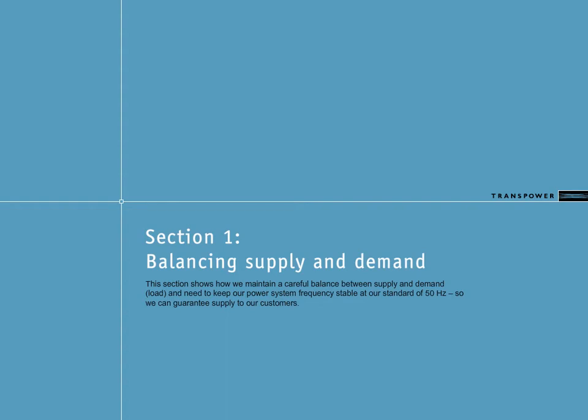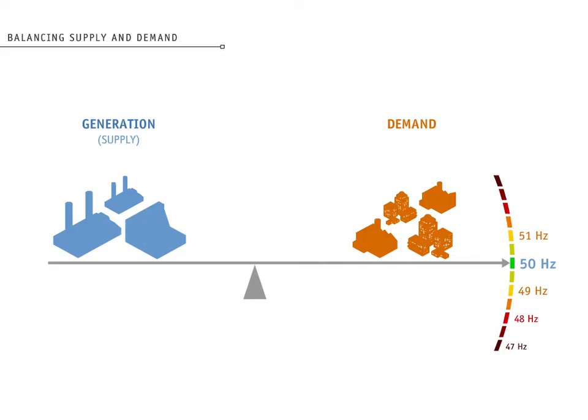To start our concept overview, we'll look at how TransPower manages supply and demand. We need to maintain a careful balance between supply and demand, or load, to keep the power system frequency stable at our standard of 50 Hz, so that we can guarantee supply to our customers.